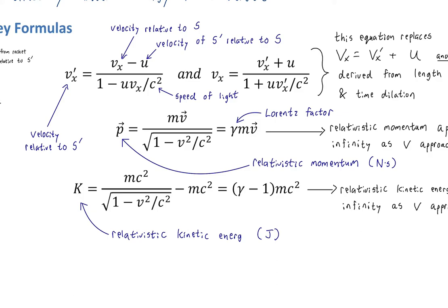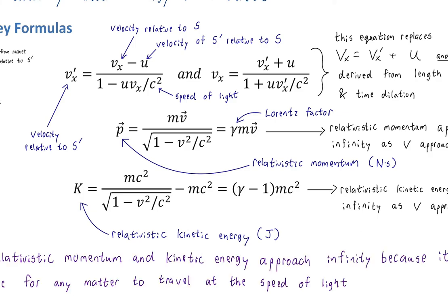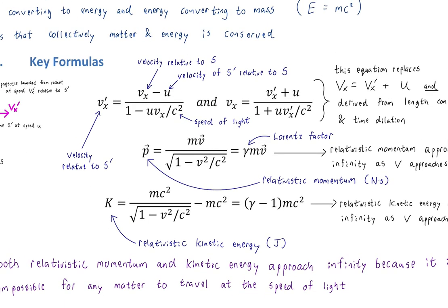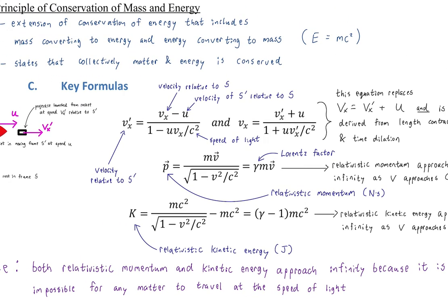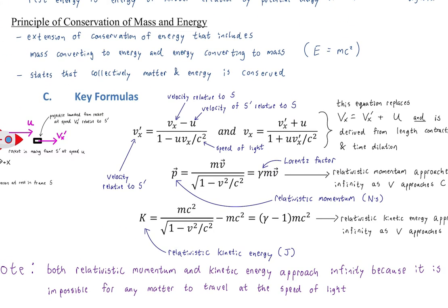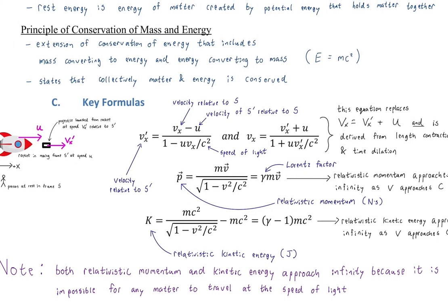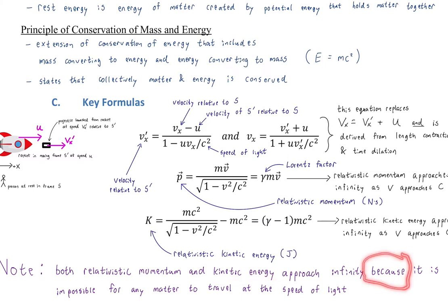Relativistic kinetic energy is still measured in joules. Both relativistic momentum and kinetic energy approach infinity because it is impossible for any matter to travel at the speed of light.